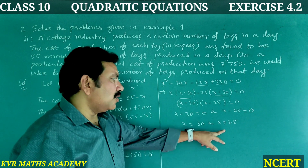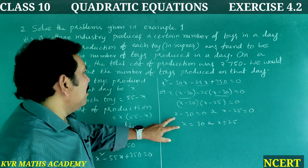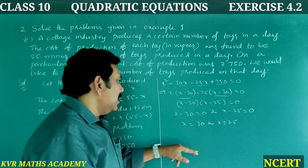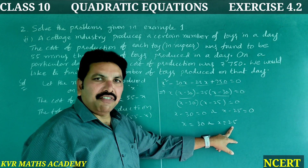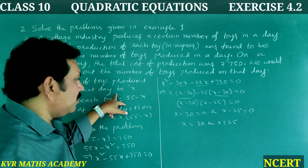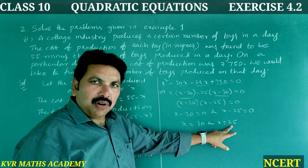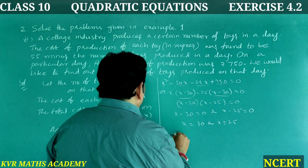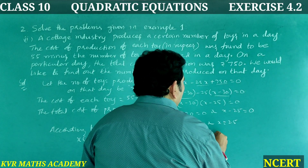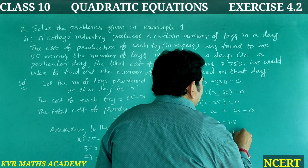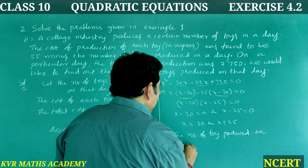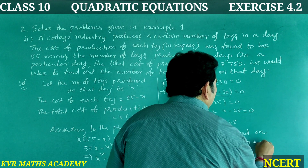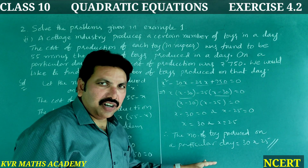x equals 30 or x equals 25. Therefore, the number of toys produced on that particular day is equal to 30 or 25. Have you understood clearly?